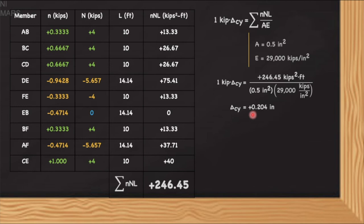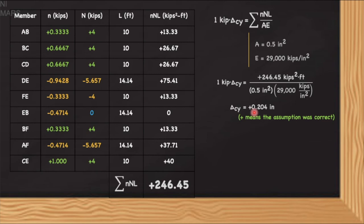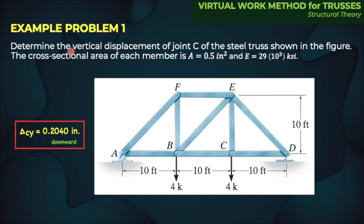The positive result means that the assumption on the direction of displacement is correct. Since we applied a downward vertical unit load in the virtual truss, we assumed a downward deflection at joint C, and since the answer is positive, that assumption was correct. Therefore, our final answer is that delta CY, the vertical deflection at joint C, is equal to 0.2040 inches downward.